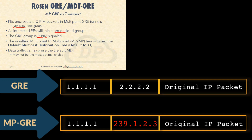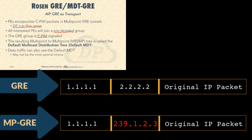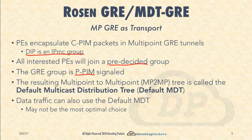The resulting tree is a multipoint-to-multipoint tree — think of PIM BIDIR when thinking about this — because all PEs are both senders and receivers. This is called the default Multicast Distribution Tree, which is an IP multicast tree that has all PEs as both senders and clients. Data traffic can use the same default MDT, and by default that is what happens, although it may not be the most optimal choice — something that becomes clearer when looking at the actual configuration.